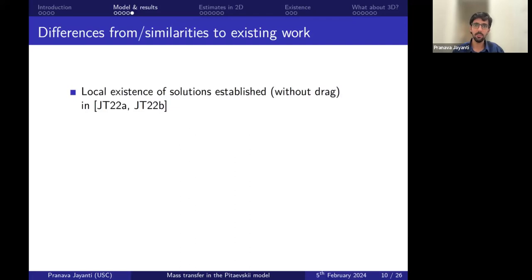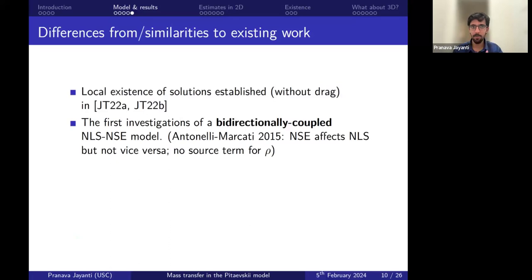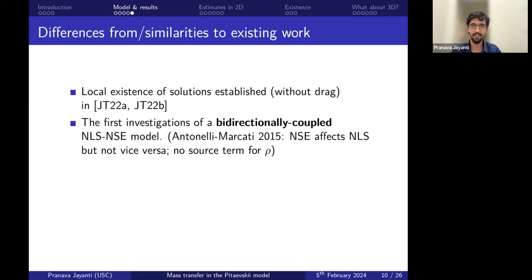We explored local existence of solutions without drag in previous work with Konstantina Trivisa. The Pitaevskii model we consider is the first investigation of a bidirectionally coupled Schrödinger equation with Navier-Stokes. Even in the physics literature it hasn't received much computational attention because simulating Navier-Stokes to high precision is already very complicated, and adding the Schrödinger equation introduces too many degrees of freedom. The Antonelli-Marcati work of 2015 is a unidirectionally coupled model, not bidirectionally coupled. Our analysis is most closely related to Kim's work from 1987, where he investigated the inhomogeneous incompressible Navier-Stokes while allowing for vacuum states — but we require the density to be bounded below for technical reasons.